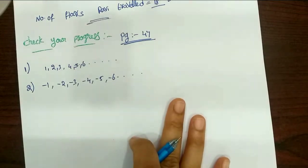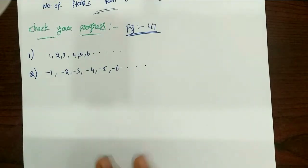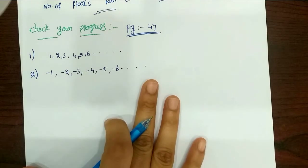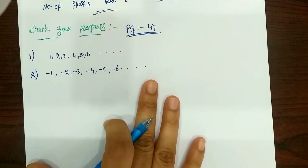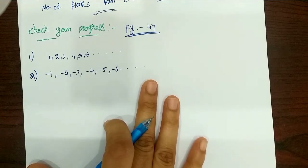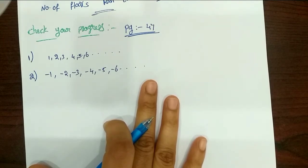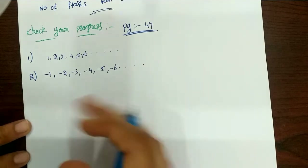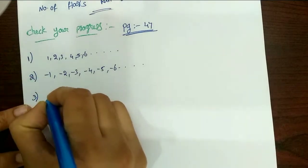Next, third point — this is page number 47. Which number is neither positive nor negative? The answer is 0. So the third answer is 0.